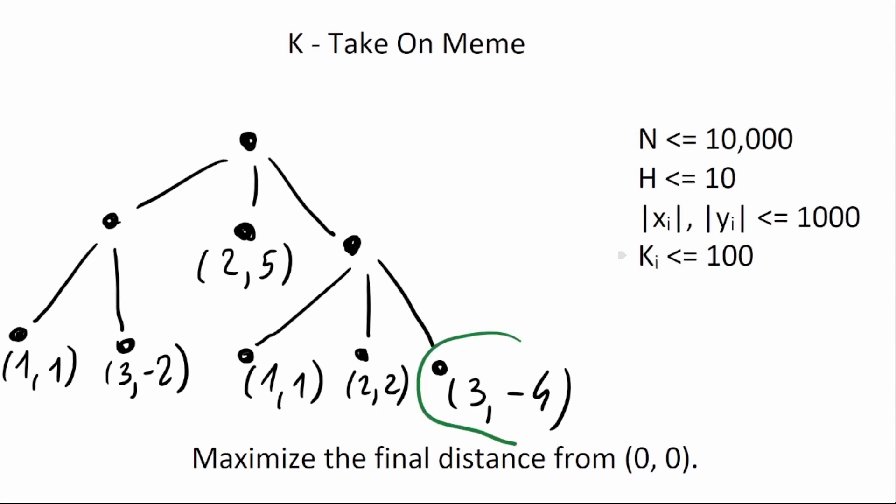In every leaf we are given coordinates like 3, minus 4 and in every node that has multiple children we have some competition between our children and one of those points we will take with a plus, let's say this one, and the remaining ones will be taken with a minus.